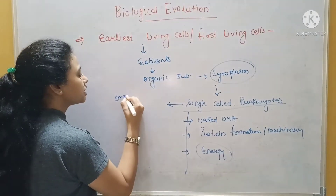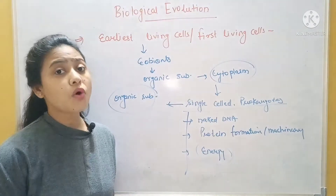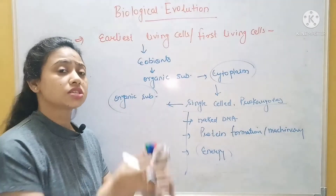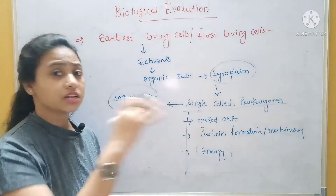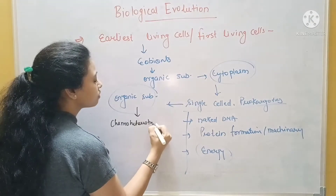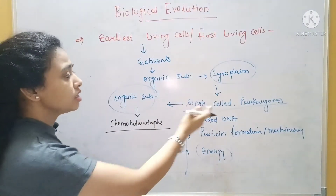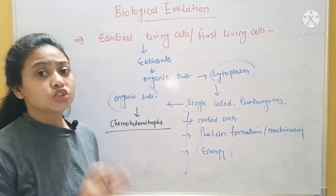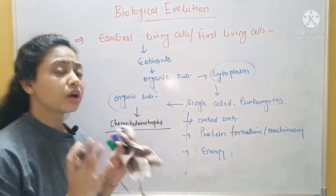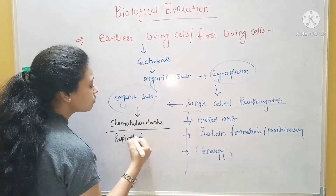Because organic substances were taken in from outside — that is the heterotrophic nutrition. The organism that used organic substances from outside and generates its own energy is known as chemo heterotrophs.